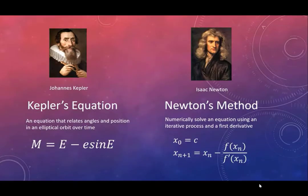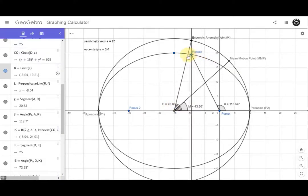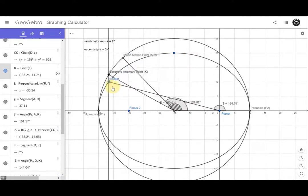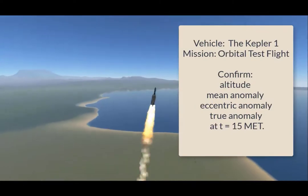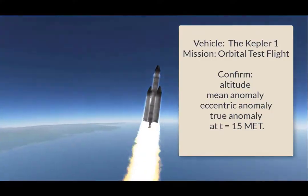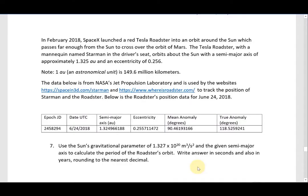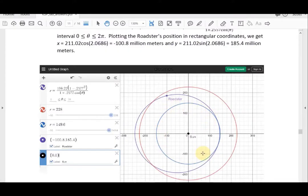In another video and lab exercises in the workbook, I solved Kepler's equation with Newton's method using Desmos, GeoGebra, Excel, and Kerbal Space Program to illustrate and confirm those calculations. I used those principles to confirm mean, true, and eccentric anomaly for a flight in KSP, and then used those same principles to confirm real-life data downloaded from NASA's Jet Propulsion Laboratory — data which I could then use to plot the position of the Tesla Roadster launched by SpaceX in 2018.